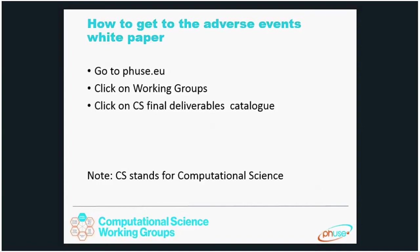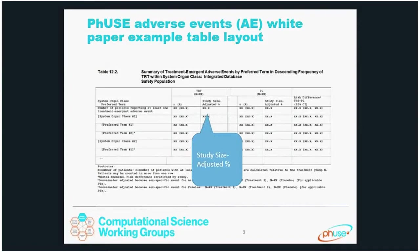It's a good idea to take a look at the white paper after viewing this video. One of the things that you will see is a table like the following. It's a mock table and it includes a column for study size adjusted percent. In this video we'll be explaining why we've elected to include that.